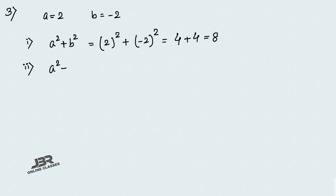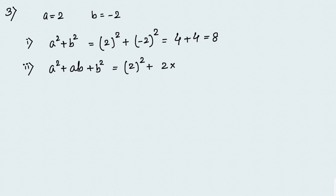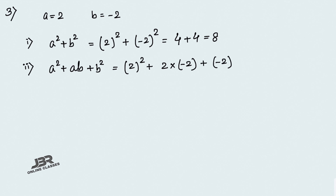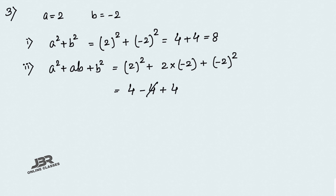Number 2: a² plus ab plus b². So 2² plus 2 into (minus 2) plus (minus 2)². That gives 4 plus (minus 4) plus 4. The plus 4 and minus 4 cancel out, so your final answer is 4.